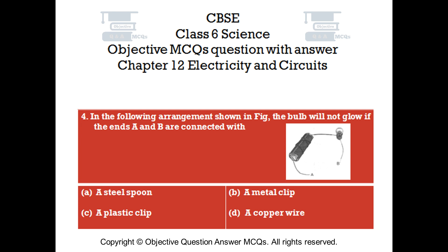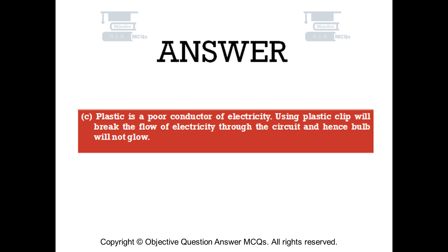In the following arrangement shown in the figure, the bulb will not glow if the ends A and B are connected with: Option A — a steel spoon; Option B — a metal clip; Option C — a plastic clip; Option D — a copper wire. The right answer is option C. Plastic is a poor conductor of electricity. Using a plastic clip will break the flow of electricity through the circuit and hence the bulb will not glow.